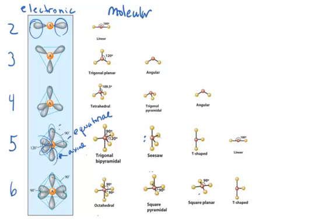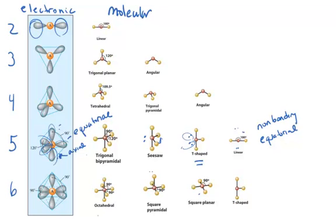The bond angle for the seesaw shape would be a little bit less than 120 degrees. In the case of two non-bonding pairs of electrons, they would both be in the equatorial position and the resulting molecular shape is called T-shaped. Finally, if you have three non-bonding pairs of electrons, all three would find themselves in the equatorial position, and you would be left with two bonds as far apart in space as possible from each other and from the three non-bonding pairs of electrons, and the shape would end up linear. So all non-bonding pairs are going to end up in the equatorial position in the case of the trigonal bipyramidal.